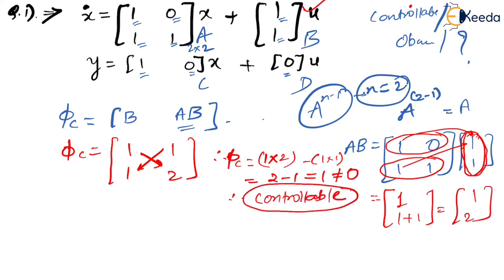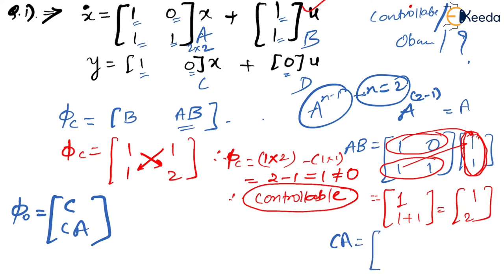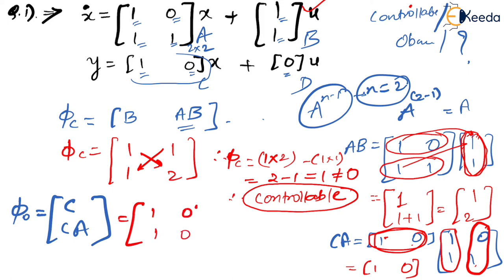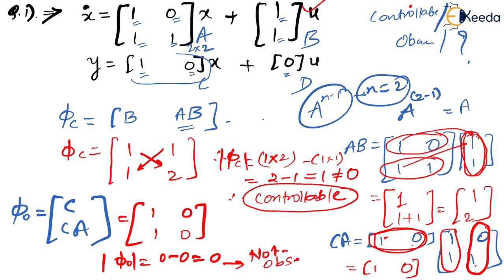Now let us check observability. Phi_0 = [C; CA]. C = [1 0], A = [1 0; 1 1]. C·A: first element = 1×1 + 0×1 = 1, second element = 1×0 + 0×1 = 0. So C·A = [1 0]. Therefore Phi_0 = [1 0; 1 0]. Determinant of Phi_0 = 1×0 − 0×1 = 0. Since the determinant is 0, the system is not observable.